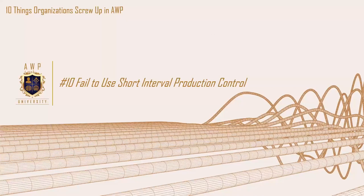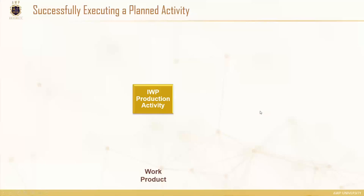The first one: fail to use short interval production control. What is short interval production control? Often within the advanced work packaging and work face planning world, we tend to forget that there's life beyond AWP. The AWP itself is not the end of the planning activity. That craft task grouping is maybe dropped down to 600 to 1,000 hours — or whatever makes sense as we work on a new definition for AWP type and size.